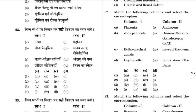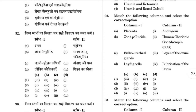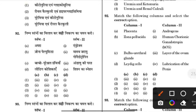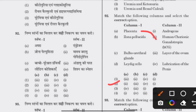Match the following columns and select the correct option. Placenta — human chorionic gonadotropin. The answer is 2.